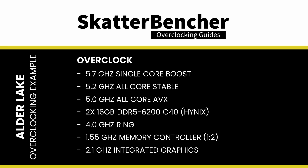The overclock consists of a single core boost to 5.7 GHz, an all-core stable frequency of 5.2 GHz, an AVX all-core frequency of 5 GHz, DDR5 6200 memory with Hynix ICs, a 4 GHz ring frequency, a 1550 MHz memory controller frequency, and the integrated graphics at 2.1 GHz.